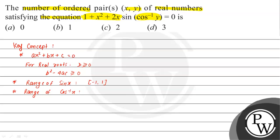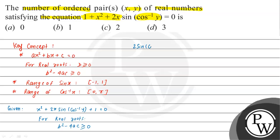The range of cos⁻¹(x) is from 0 to π. Our quadratic equation is x² + 2x·sin(cos⁻¹y) + 1 = 0. This is a quadratic in x. Comparing, we have a = 1, b = 2·sin(cos⁻¹y), and c = 1. For real solutions, the discriminant condition gives us (2·sin(cos⁻¹y))² minus 4 times 1 times 1 ≥ 0.